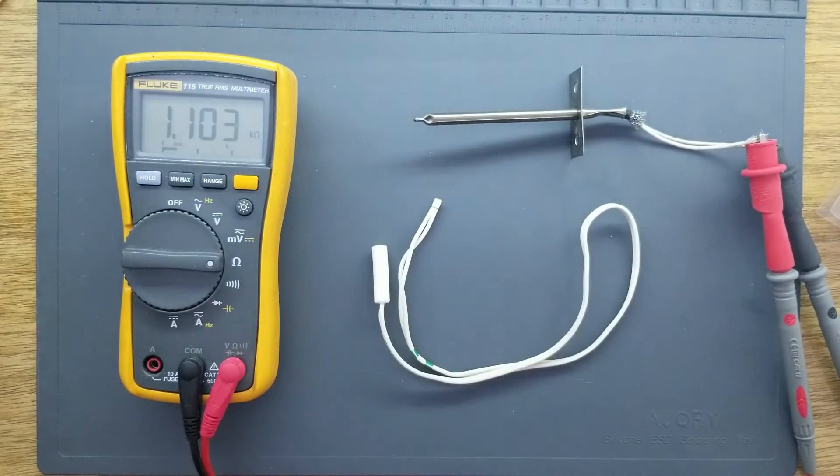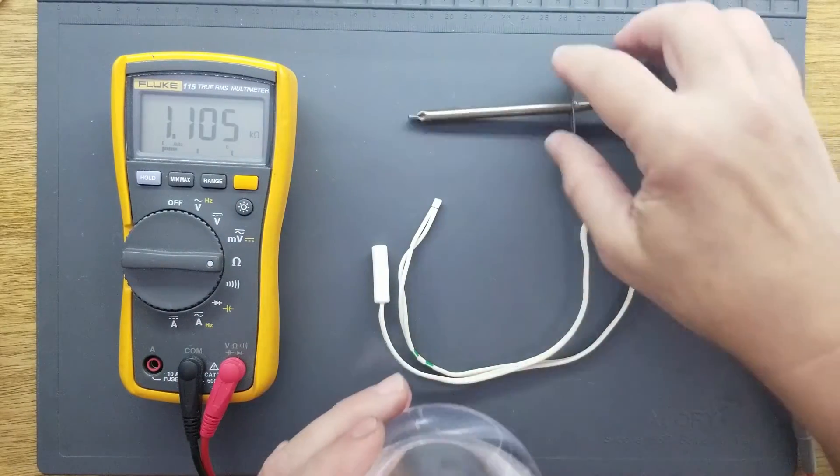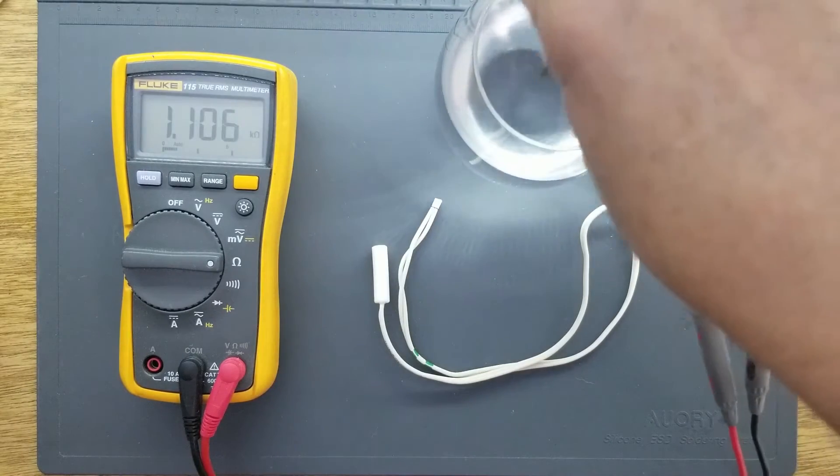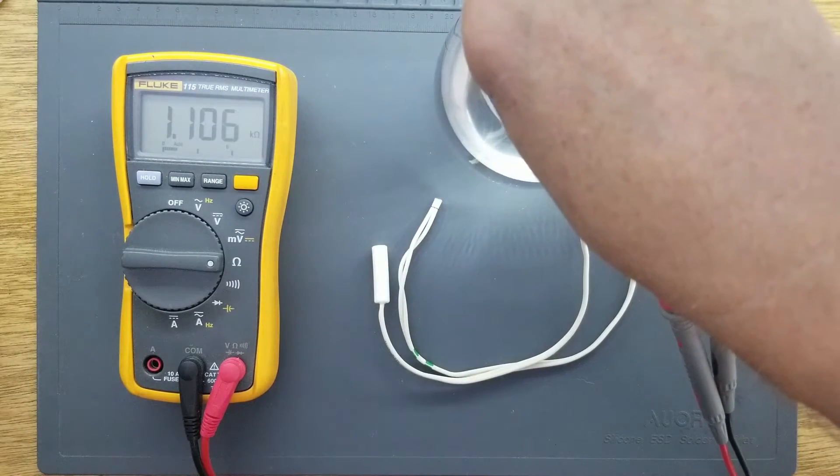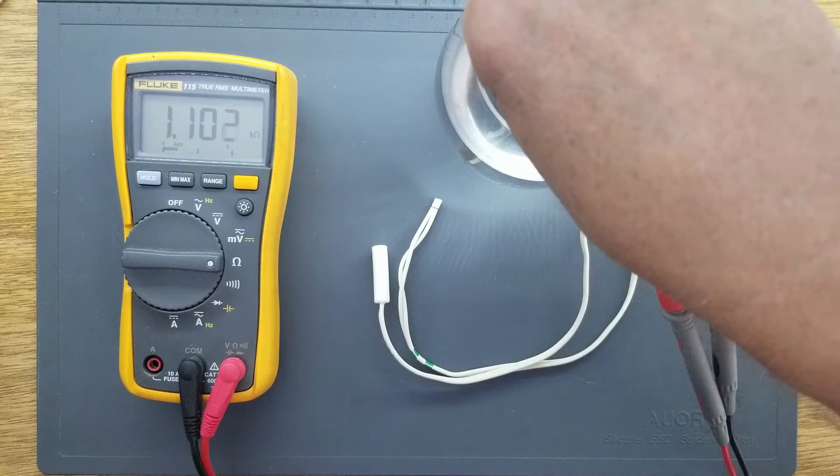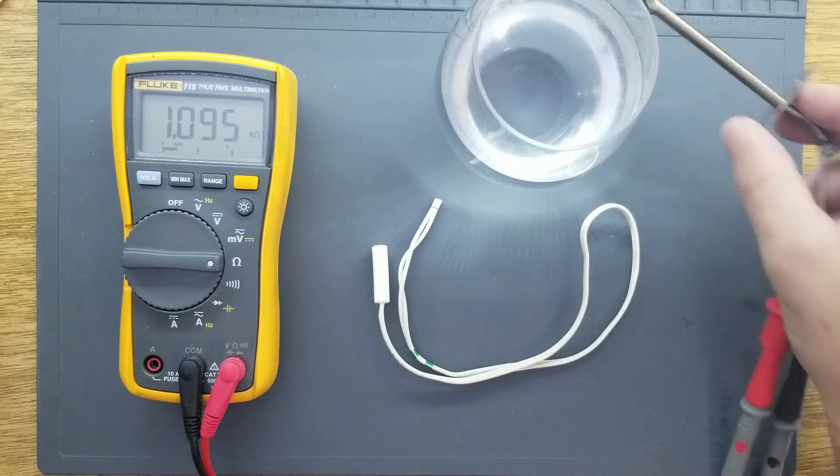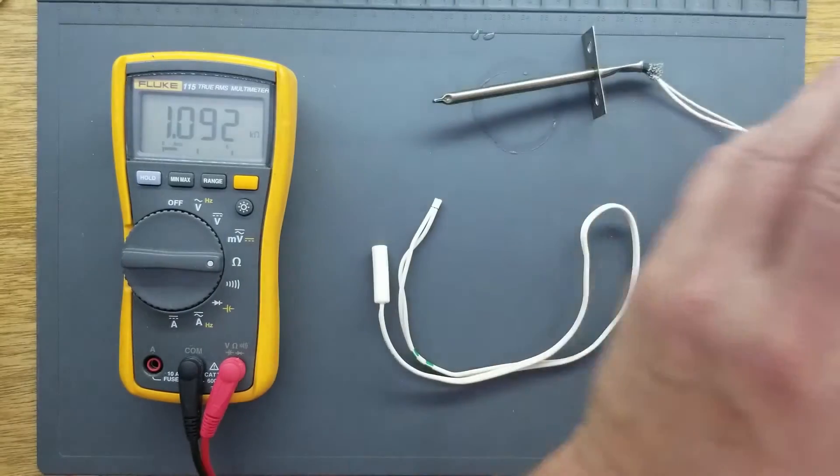As I cool it down—this was ice water, so the ice melted—as I cool it down, the temperature decreases. So that's a positive temperature coefficient thermistor.